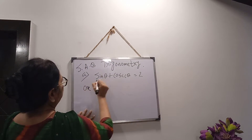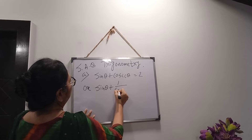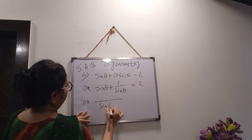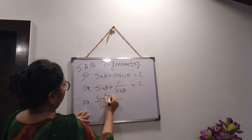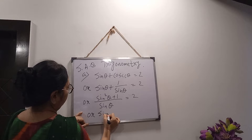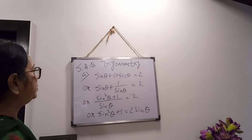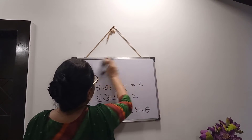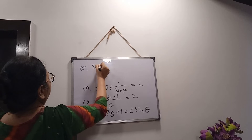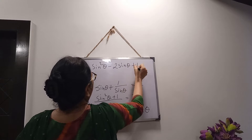From here we have to calculate the value of sin θ. Cosec means 1/sin θ. Take the LCM, then cross multiply. Then we have to apply one algebraic formula. Bring all the terms to the left hand side, so we are getting sin²θ - 2sinθ + 1 = 0.